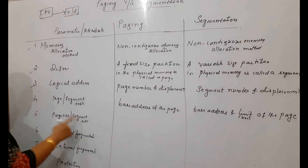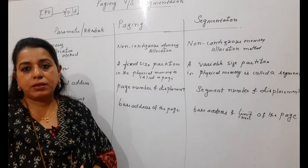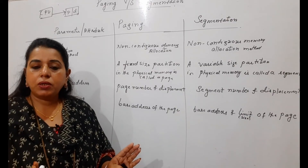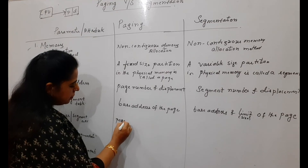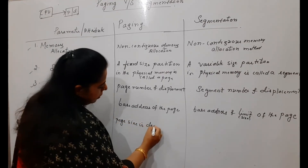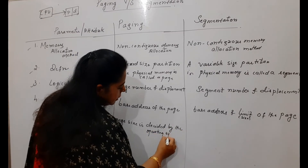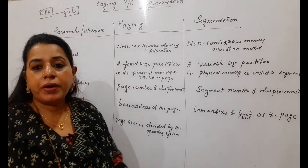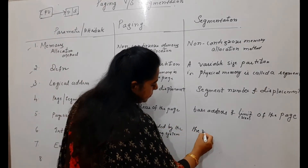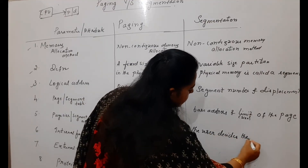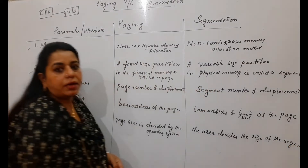The next parameter is page size versus segment size. Page size is fixed and is decided by the operating system — the user is not at all bothered about how to decide the size of the page. Whereas segment size completely depends on the different segments of a program. Since the user writes the program, the user decides the size of the segments.